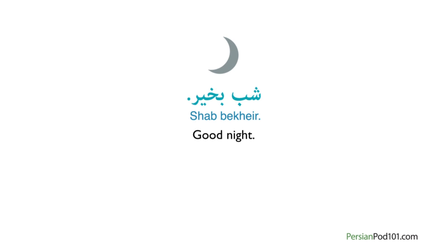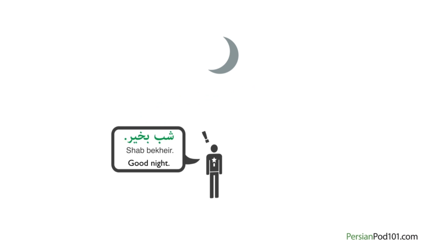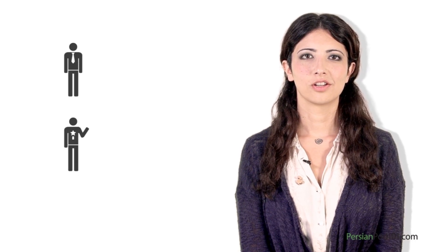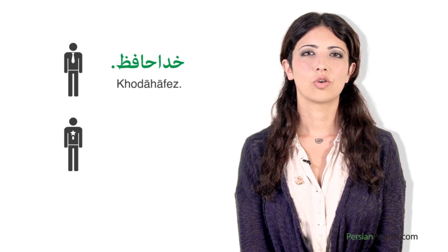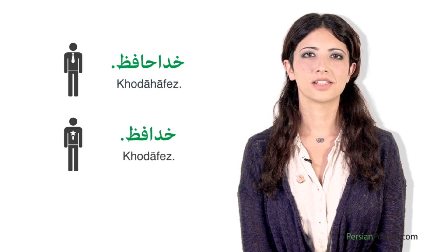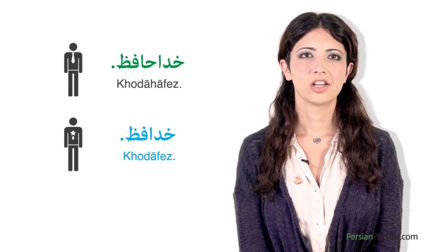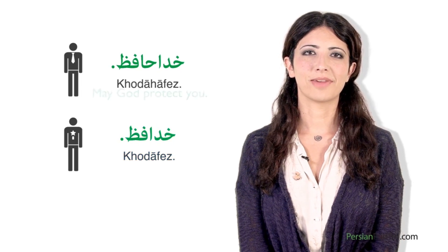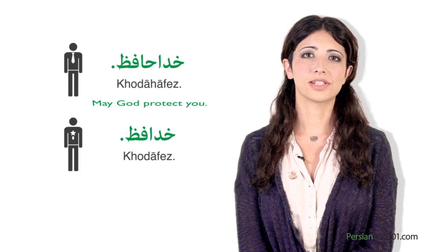Good night is 'shab bekhayr.' Notice that we don't say salam before shab bekhayr, because we don't say good night when we meet someone — it is only used when leaving. In Persian, there is only one word for saying goodbye, but there is a small difference between the formal and informal versions. Formal: 'Khodahafiz.' Informal: 'Khodahafiz.' Khodahafiz literally means may God protect you, but it is used to say goodbye.